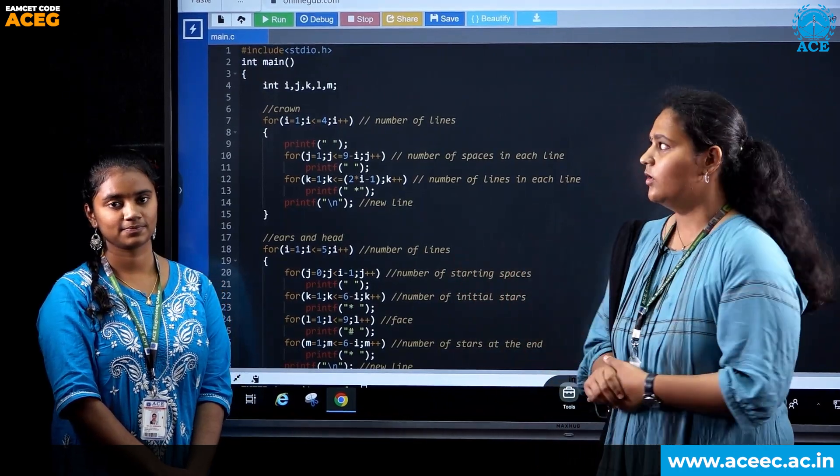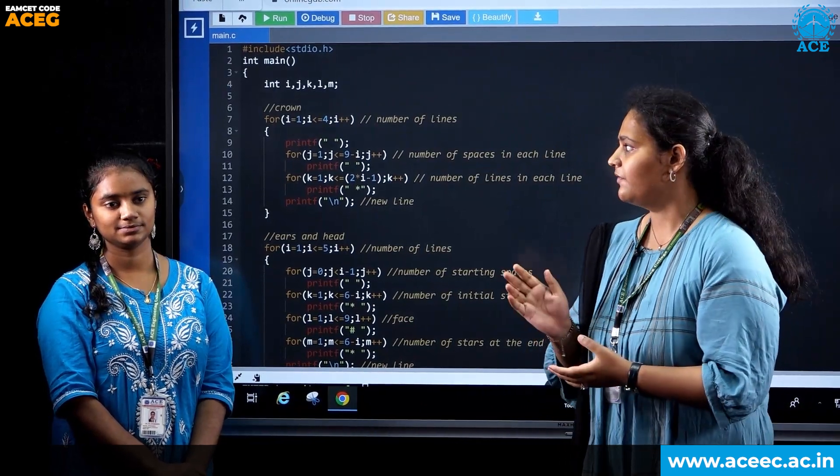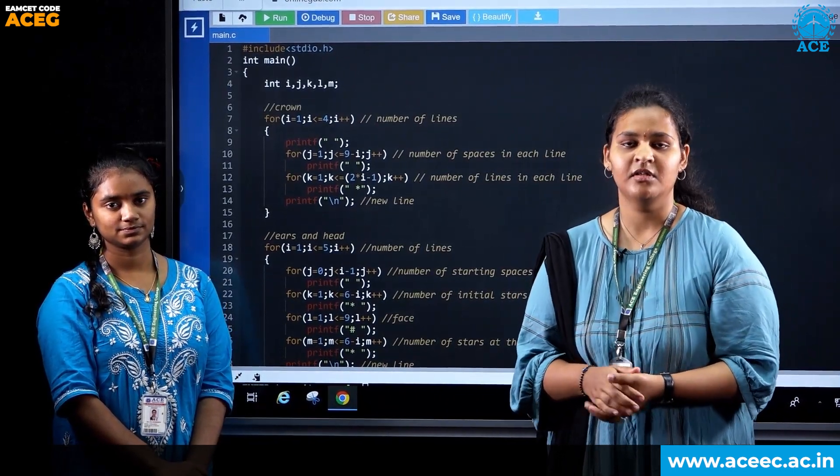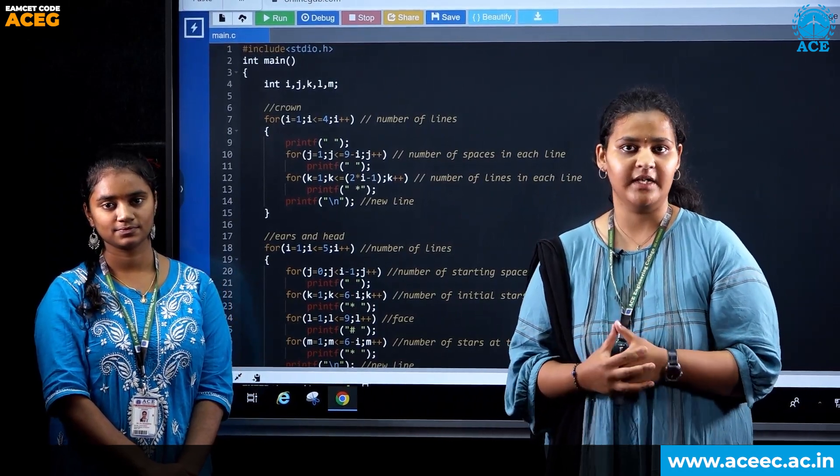Coming to the code, you can see we declared five different variables of data type int. We also divided the code into four different sections: Crown part, head and ear part, trunk first two lines and trunk next two lines.